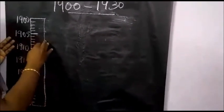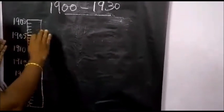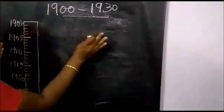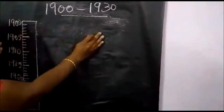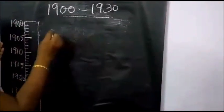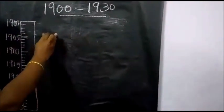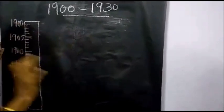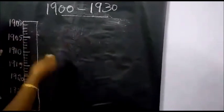Then the next tip: write the incident on your right side. Write any 5 events with the correct year on the right side of the timeline.